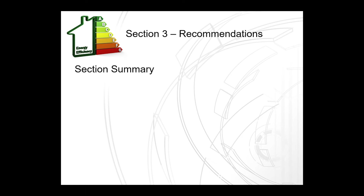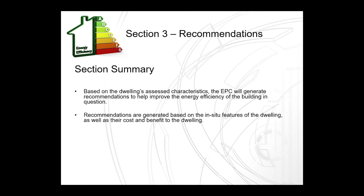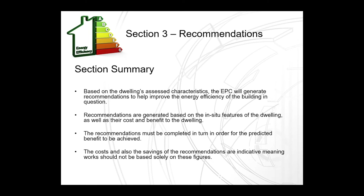The EPC will not include recommendations which would only see a very marginal improvement. To summarise Section 3: based on the dwelling's assessed characteristics, the EPC will generate recommendations to help improve the energy efficiency of the building. Recommendations are generated based on the in-situ features of the dwelling as well as their cost and benefit. The recommendations must be completed in turn for the predicted benefit to be achieved, and the costs and savings of the recommendations are indicative — meaning work should not be based solely on these figures.